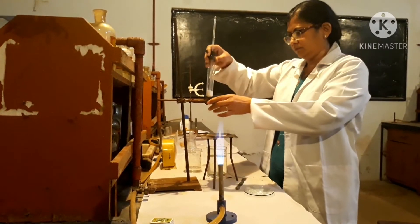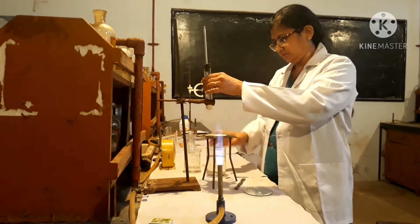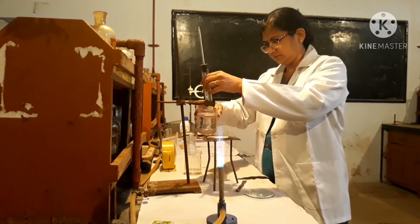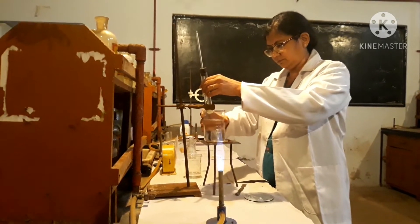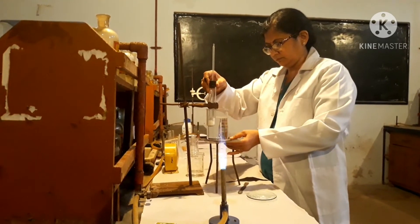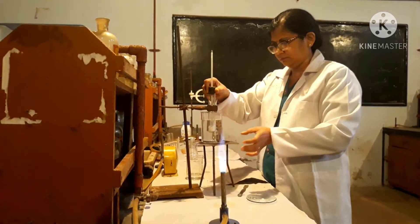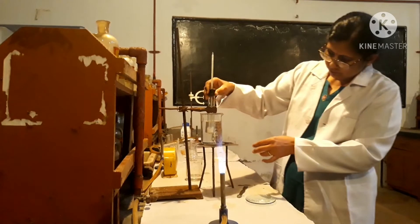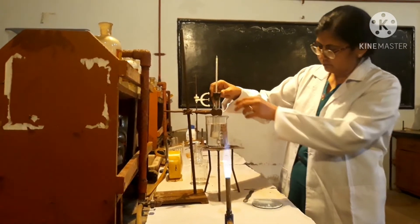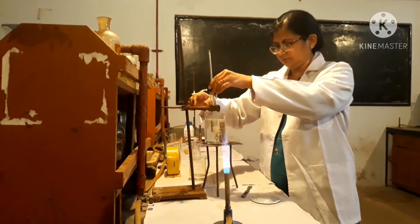Now insert the thermometer through a cork. The mercury bulb of thermometer should be completely surrounded by the salt. The mercury of the thermometer will be at room temperature, that is approximately 25 degrees Celsius.